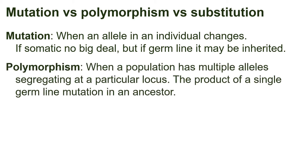Second, polymorphism. A polymorphism is when a population has multiple alleles segregating at a particular locus. This involves multiple copies of the mutant allele, but each of these would typically be the product of a single germline mutation in an ancestor some generations before. This term describes the state of a population, or the frequency of an allele, depending on how it's being used.